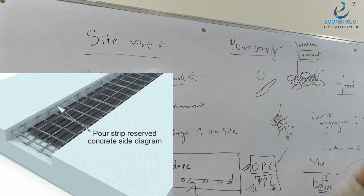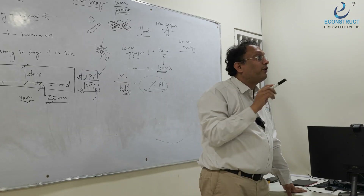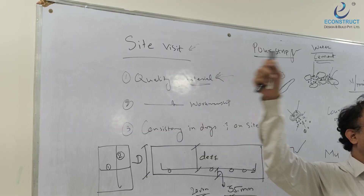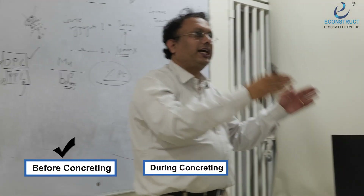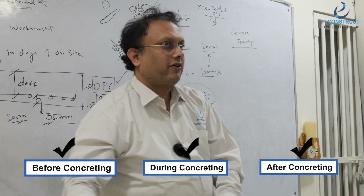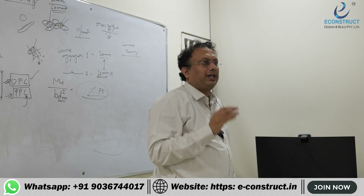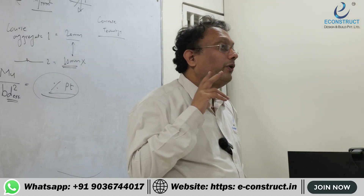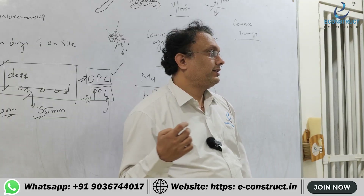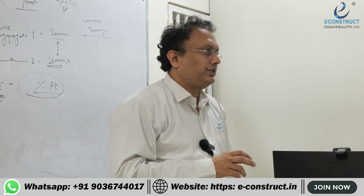There is something called a pour strip — concreting starts from there. If you do not know how to handle these simple things, it can be a very big disaster. There is a checking before concreting, a checking during concreting, and a checking after concreting. This is where a structural engineer must visit the site. You are going there not as a site engineer but as a design engineer — yet site checking is a very important responsibility of a structural engineer.